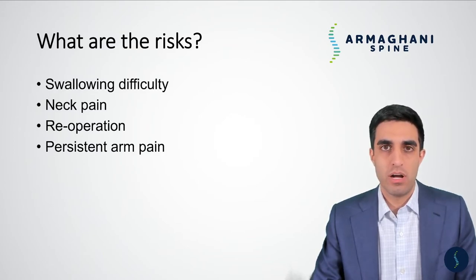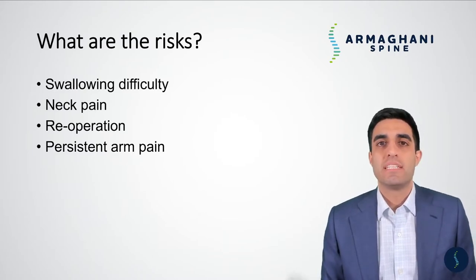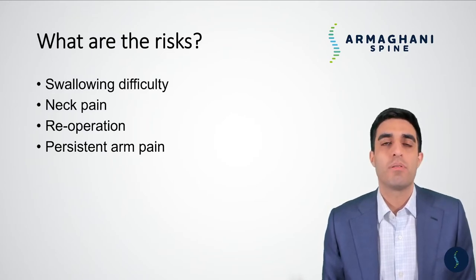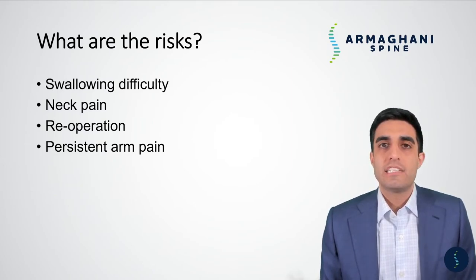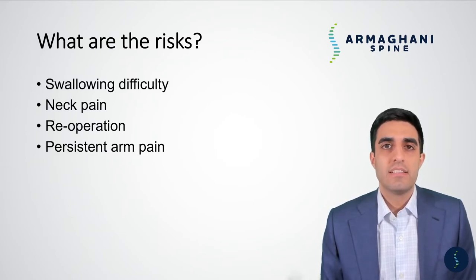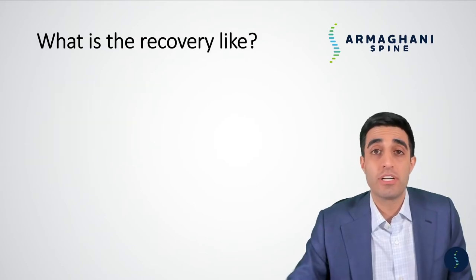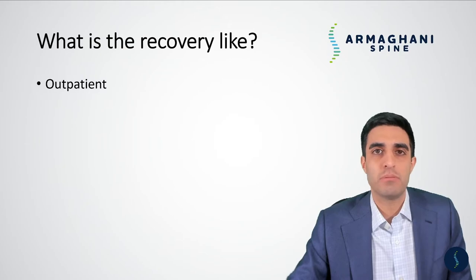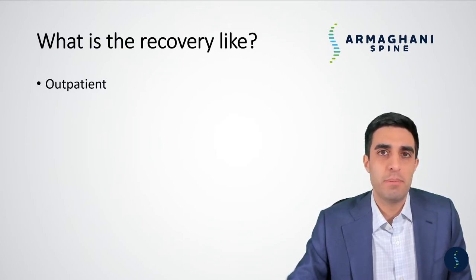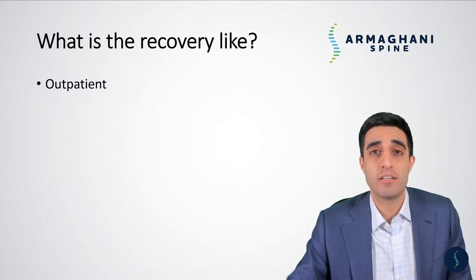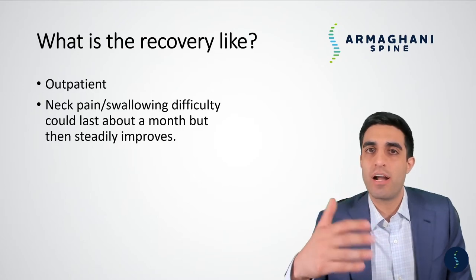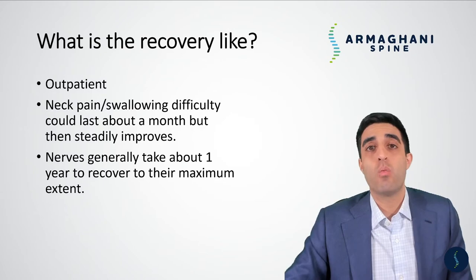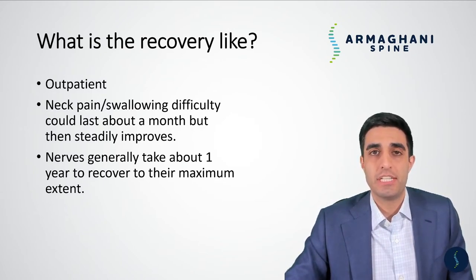Lastly, persistent arm pain is something that can occur as well. Our job as a spine surgeon is to take the pressure off of nerves and allow your body time to go through the healing process and fix any damage done to that nerve. Unfortunately, we're not able to fix a permanently damaged nerve. It takes about one year for a nerve to fully heal following a procedure like this. This doesn't mean you can't do the things you want to do, but how you feel at one year is going to be how you feel long-term. Recovery is generally done as an outpatient — you come in and go home the same day — though some patients are kept overnight for close observation.